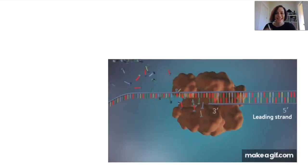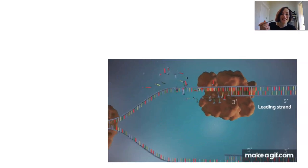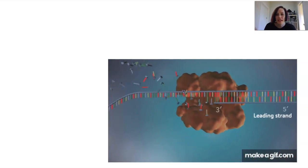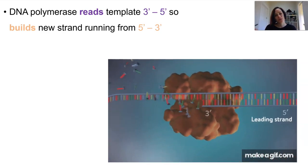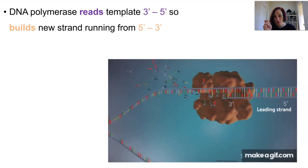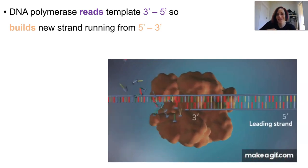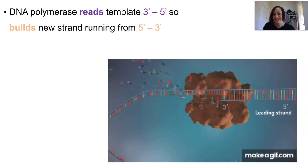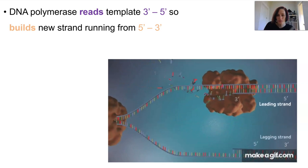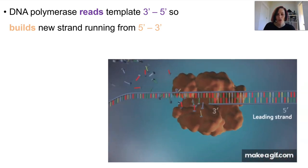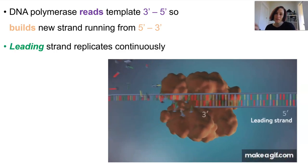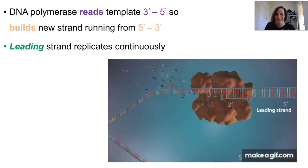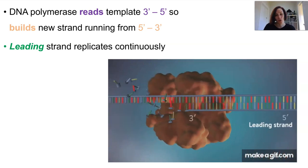Now, as helicase moves along to unwind the DNA, DNA polymerase is reading in the same direction. DNA polymerase can only read the parent strand from three prime to five prime because it's building the new DNA strand from five prime to three prime. So this is what's happening on one strand. It's known as the leading strand because it's replicated continuously in the same way that the replication fork is moving.